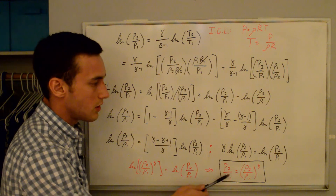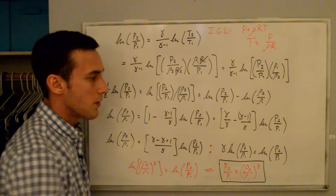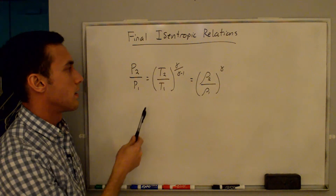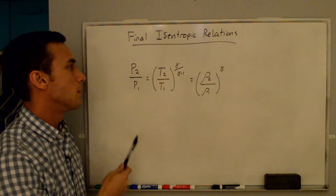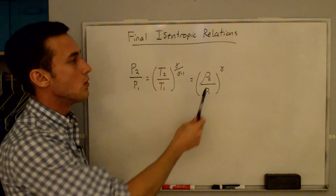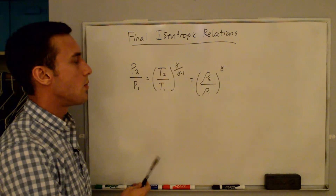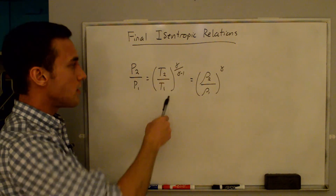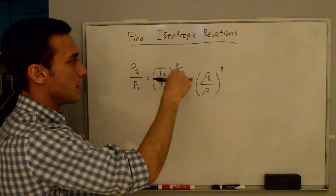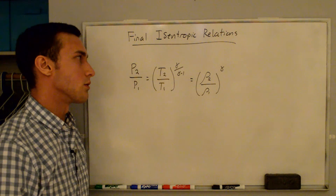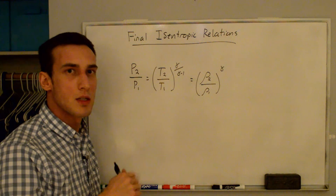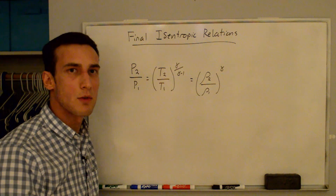That gives us the final isentropic relations: p2/p1 equals (T2/T1)^(γ/(γ-1)) equals (ρ2/ρ1)^γ. If you wanted just T2/T1 on the left-hand side relating temperatures and densities, you can move the exponents around to get similar relationships. So that covers the isentropic relations, which I'll be using in my subsequent videos on gas dynamics. Thanks for watching.